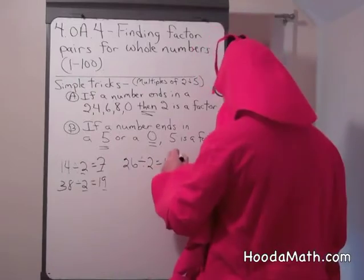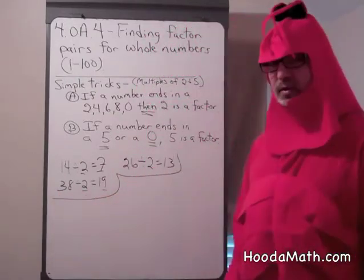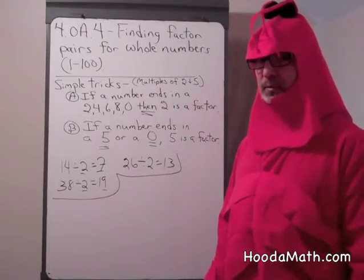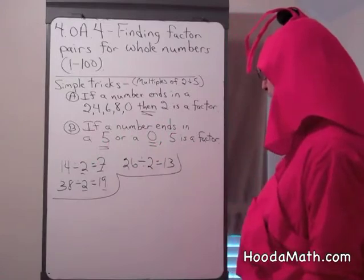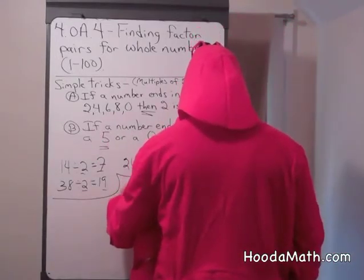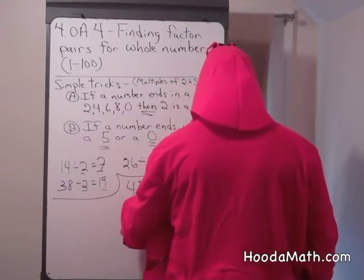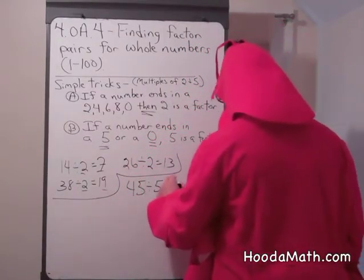You could try some more. How do we know if a number is a multiple of 5? Well, it will end in a 5 or a 0. Let's try 45. 45 divided by 5. What times 5 is 45? 9. Very good.